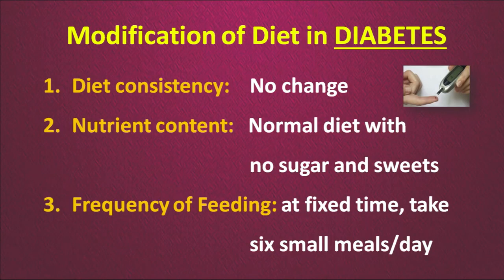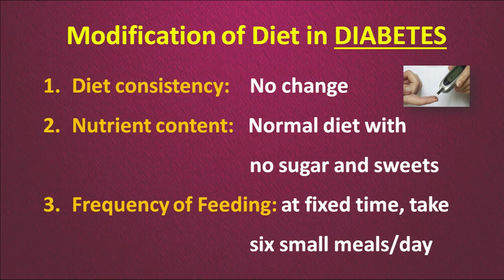Now we will talk about diet modification in case of diabetes. There is no change in diet consistency — you can have normal food — but there is a change in nutrient content. Normal diet can be eaten but without sugar and sweets. The frequency of feeding is the same as a normal diet — about five to six small meals per day — but it is advisable to take all foods at fixed times daily to help manage blood sugar levels.